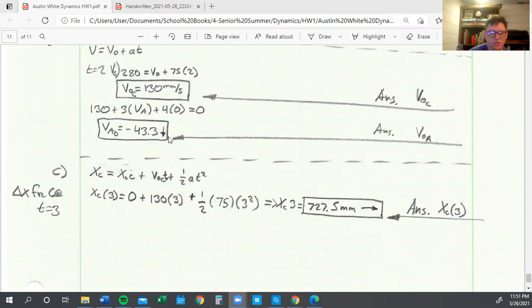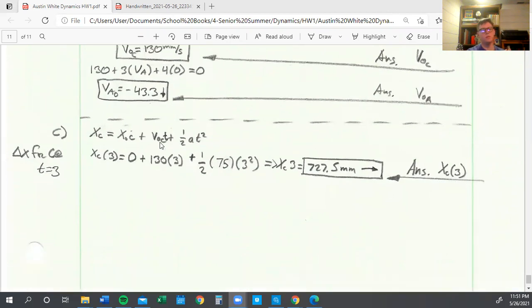The last one, change of position of slider block C after three seconds. We just use the regular XC equals X naught C plus VT plus one-half AT squared. We plug in all our known information. C at three seconds equals zero because that's the starting position. Velocity is 130 per second, T equals three. We plug everything in, 75 acceleration, three seconds again, and we find that we have 727.5 millimeters to the right. That wraps up my homework for homework one dynamics.